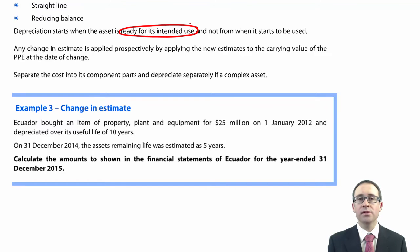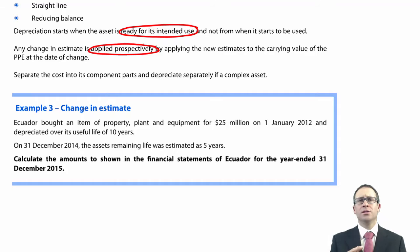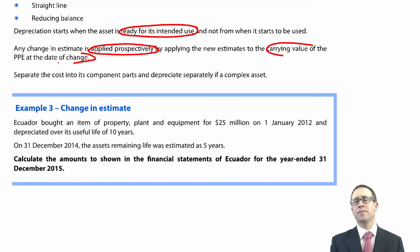If you change the estimate, whether that's a change to the method (straight line to reducing balance or vice versa), or whether you change any other estimates such as the residual value, the percentage on reducing balance, or the number of years over which you depreciate the asset, then that is an adjustment that is applied prospectively. So under IAS 8, you apply it in the year of change and then keep that into future years. How do you adjust for that change in estimates? Well, you apply it to the carrying value of the PPE at the date of change.